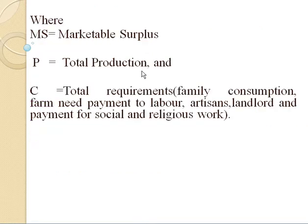Where MS is marketable surplus, P is the total production, and C is the total requirements — that is family consumption, farm needs, payment to labor, artisans, landlord, and payments for social and religious work. Suppose a farmer produces 1000 quintals of rice and his consumption requirement is 100 quintals.